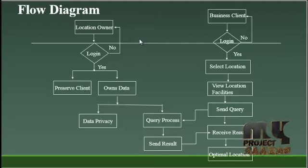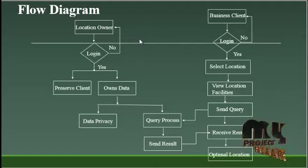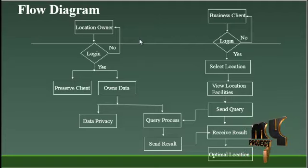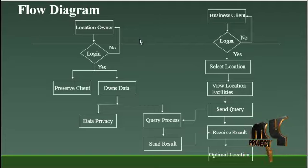The next step is sending a query. If the client wants to open a new branch for their business, the client sends a query to find the optimal location. The location owner receives, processes, and sends back the result. The client then receives the result about the optimal locations. That covers all the processes — this is the overall process of our project.